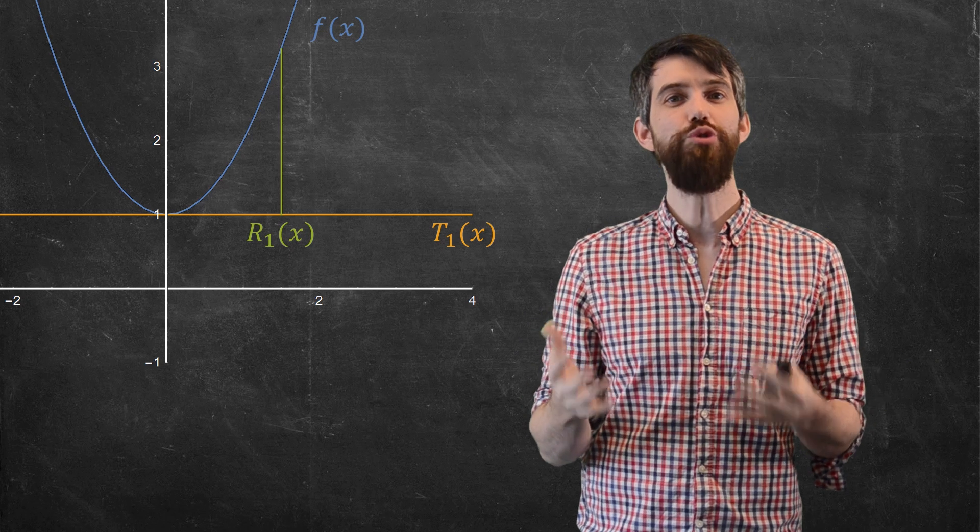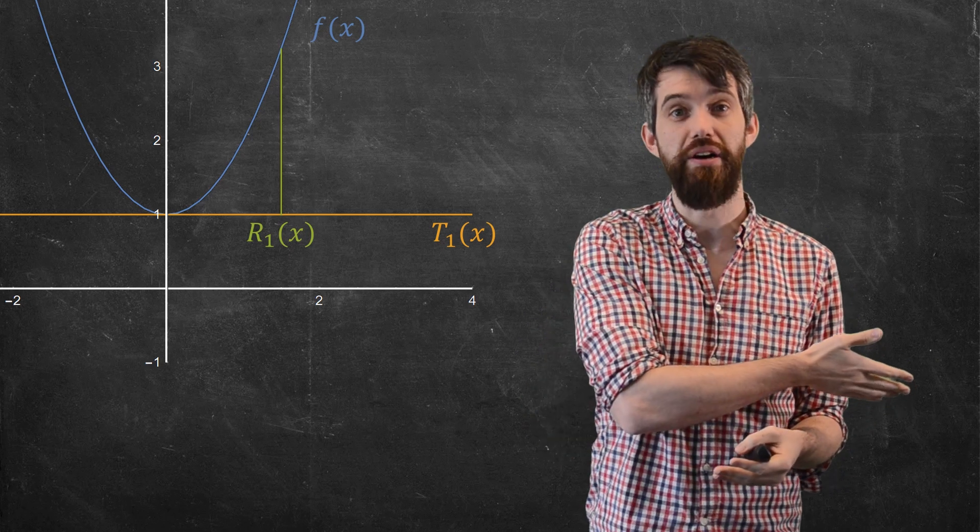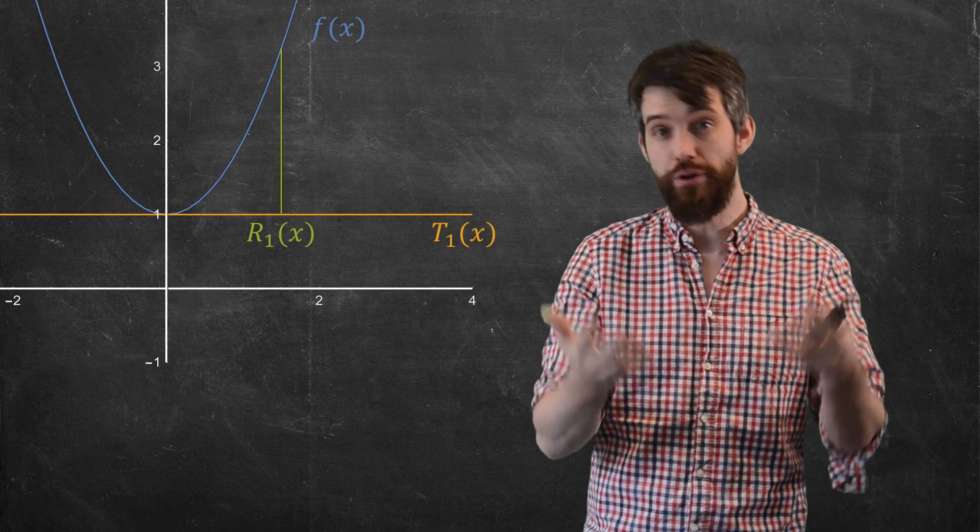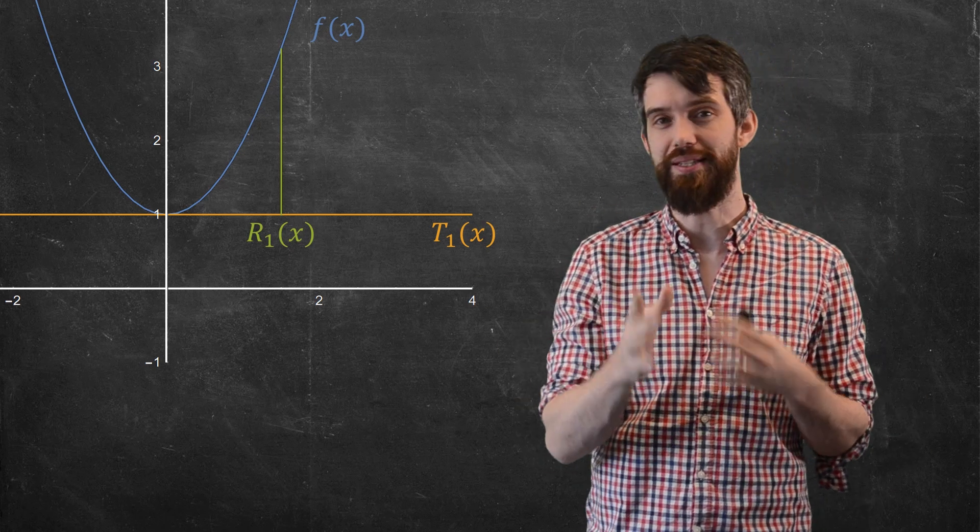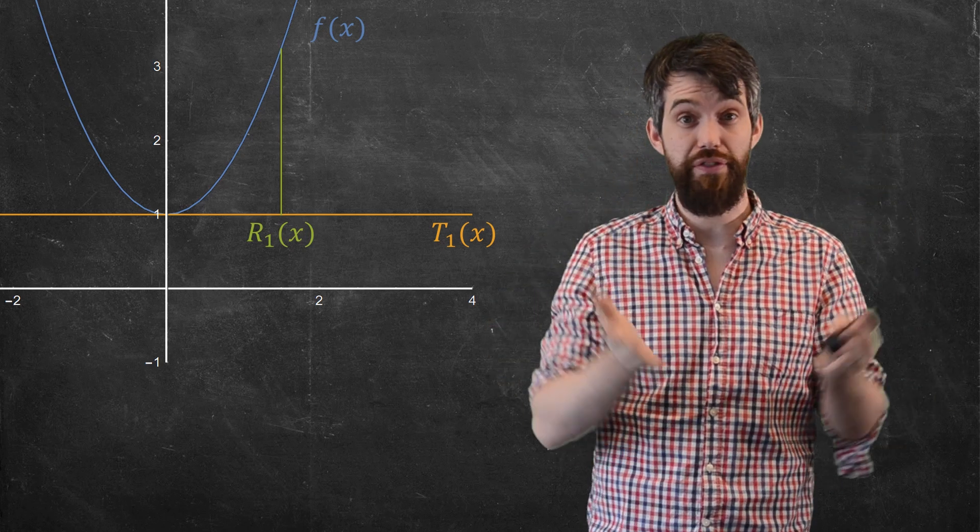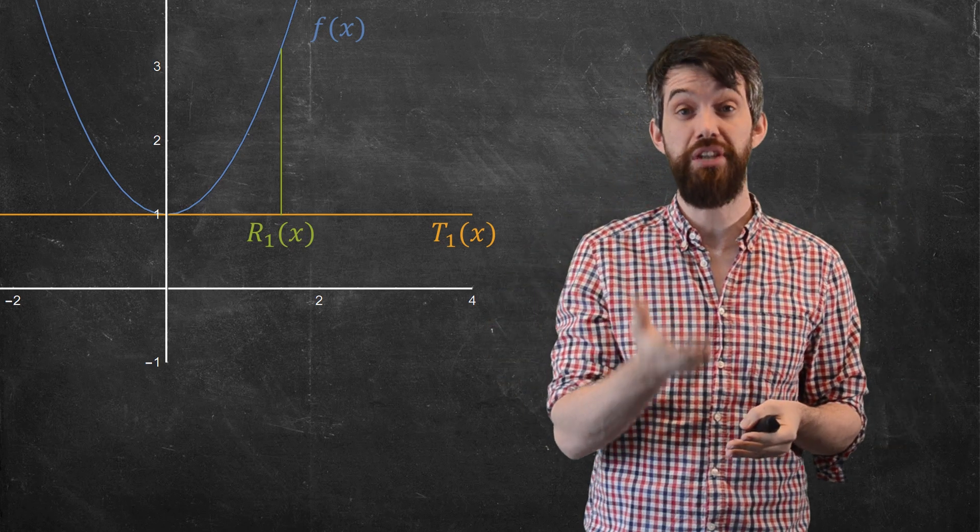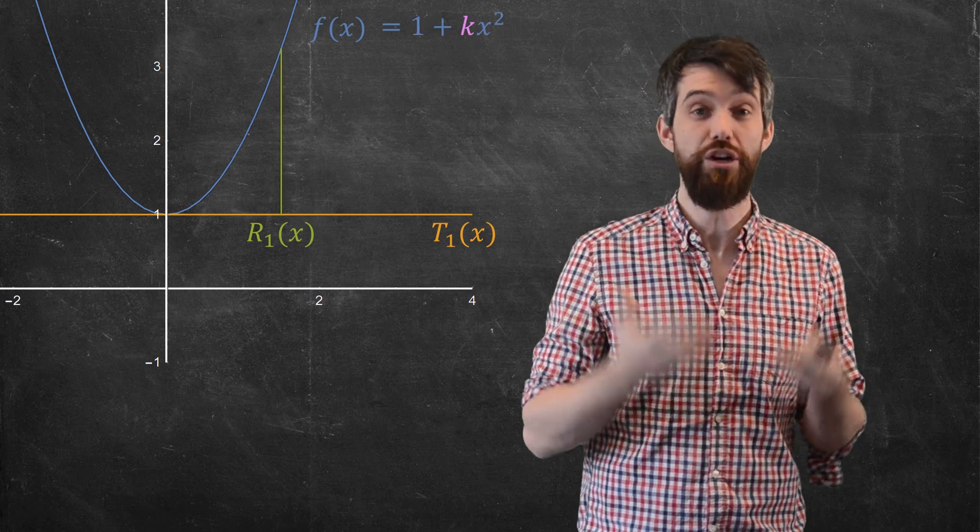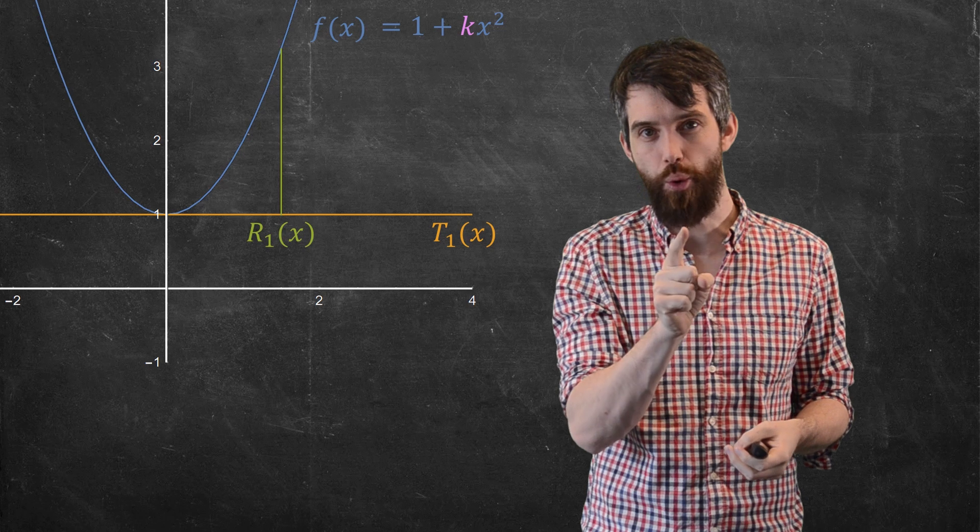Now concavity is what the second derivative tells us about. That is, I've done my first approximation here, my linear approximation happens to be a horizontal line in this example. But the second derivative, the concavity of the function, is going to make very large differences in terms of how bad the remainder is. Now I had to program this so I know that my actual function is 1 plus kx².